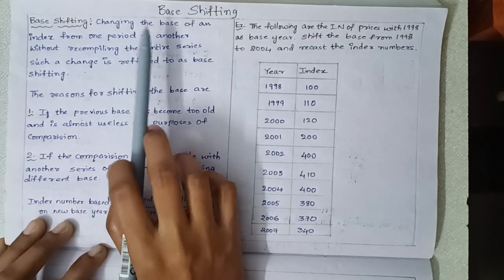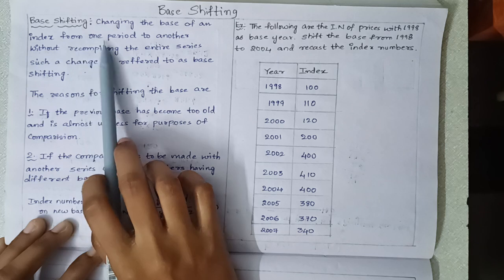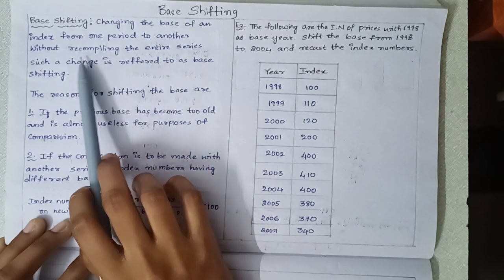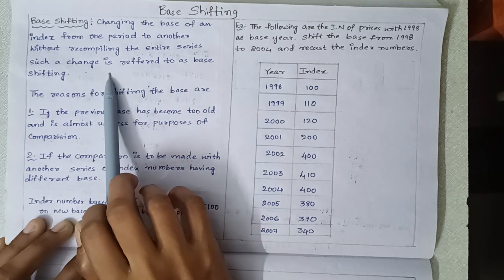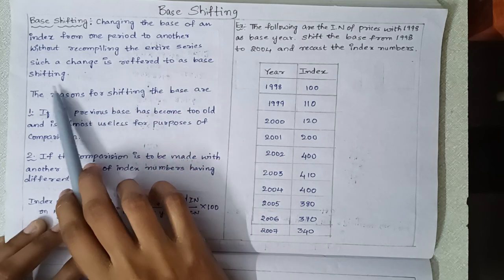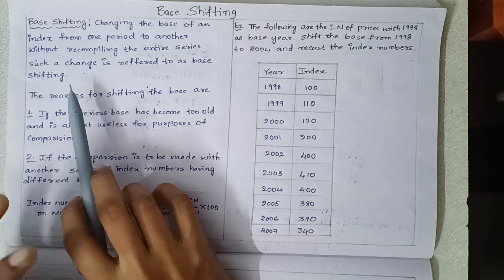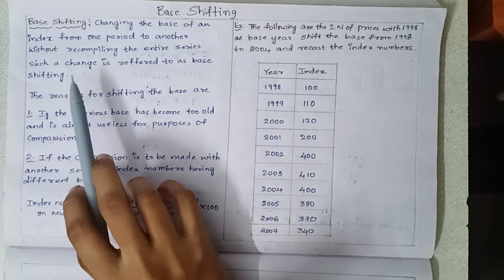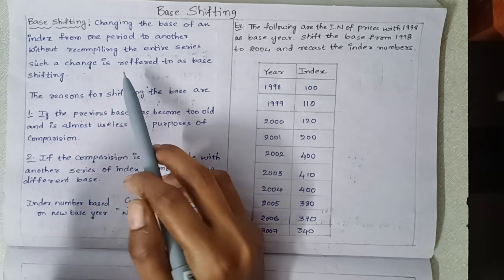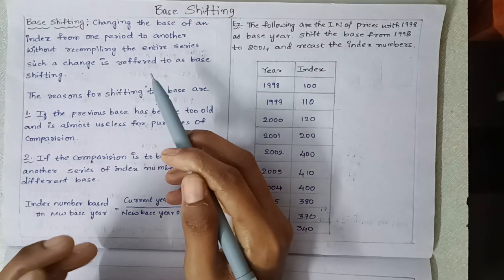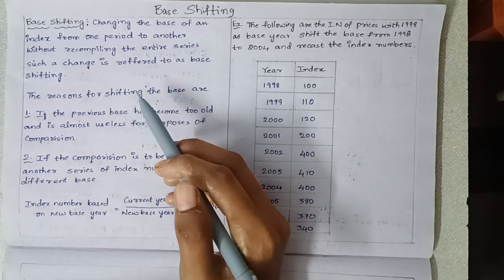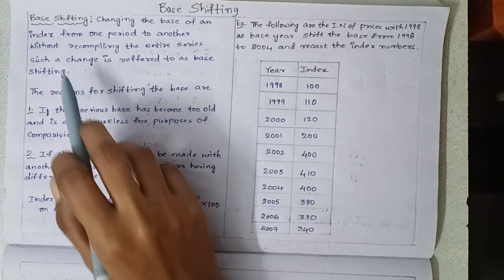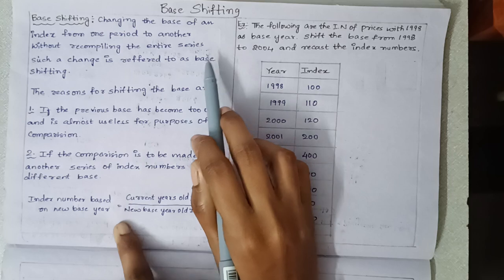The definition is changing the base of an index from one period to another without recompiling the entire series. Such a change is referred to as base shifting. Base shifting means to change the base year from one period to another. That will change the entire series without recompiling the entire series.